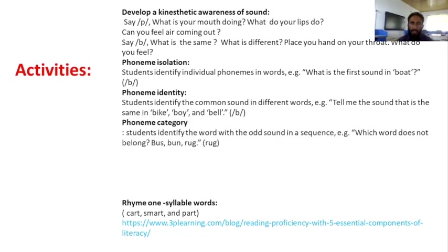The next is phoneme categorization. In this activity, students identify the word that has an odd sound in a sequence — one that is different from the others. For example, given the three words bus, barn, and rock, students will recognize that the last sound in 'rock' is different from those in 'bus' and 'barn.' This way they can differentiate between phonemes — identifying the sound that is dissimilar from the others.